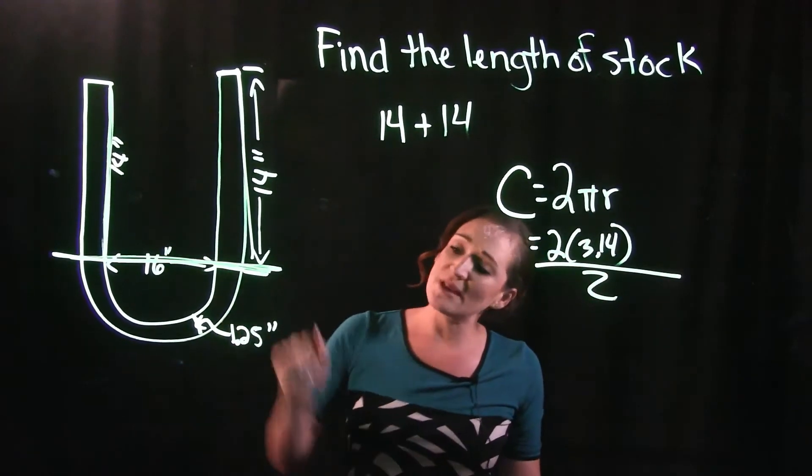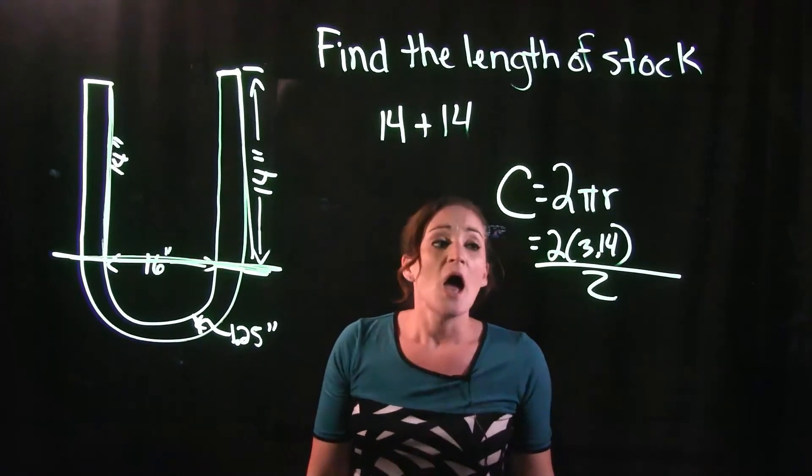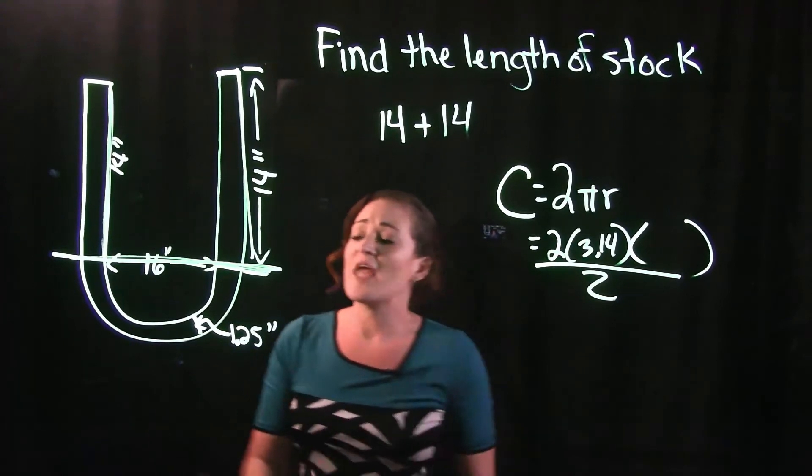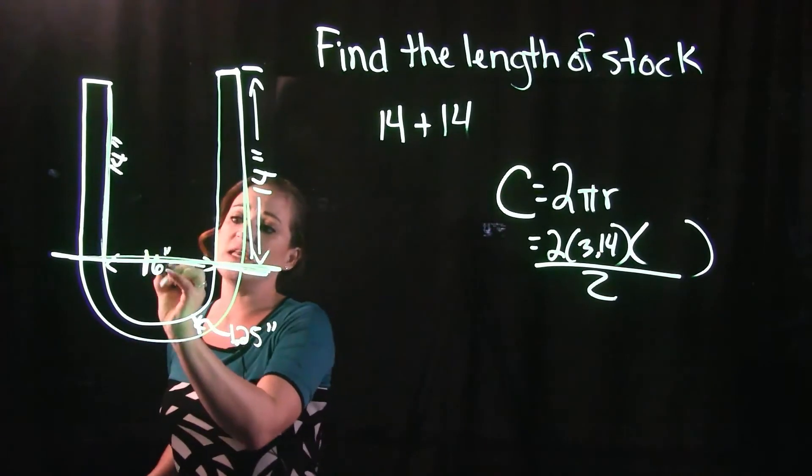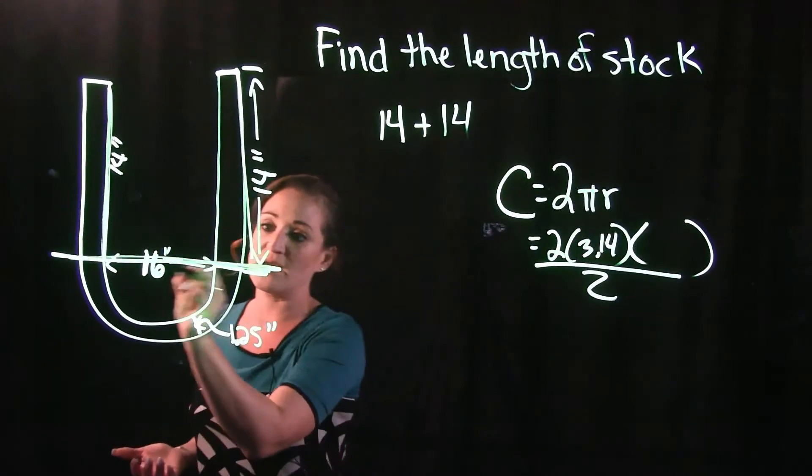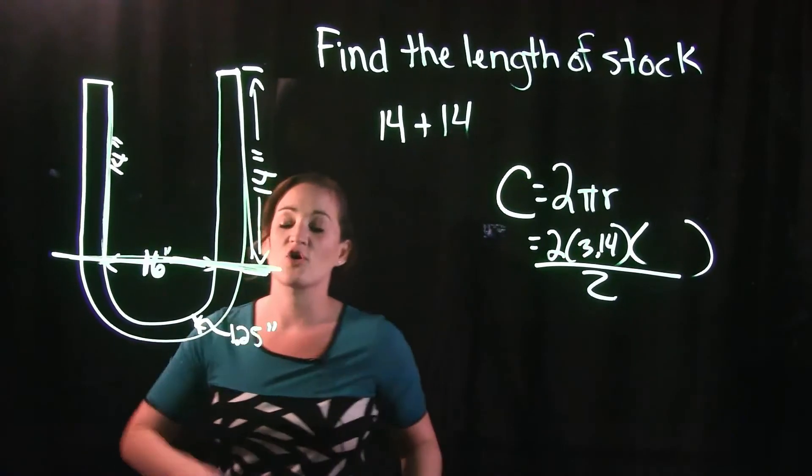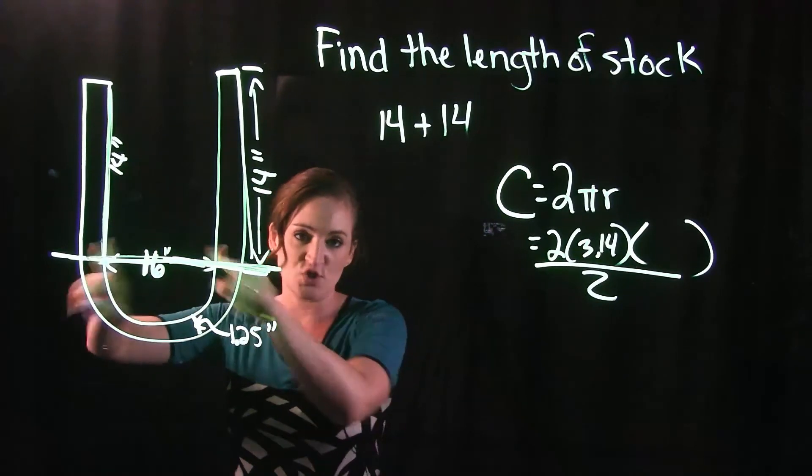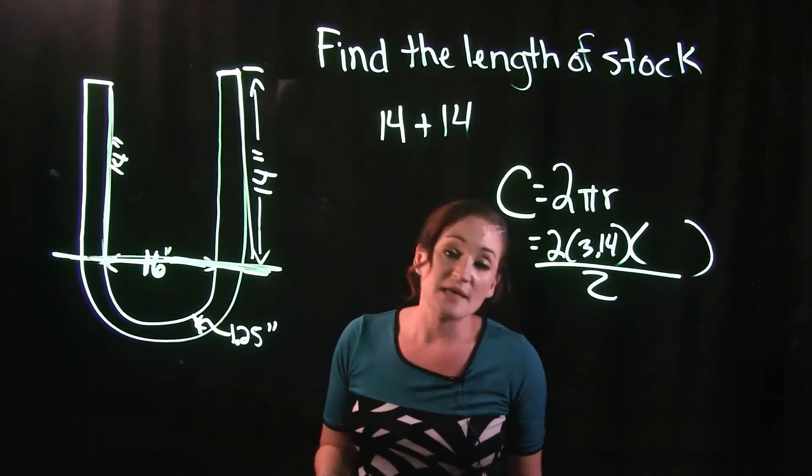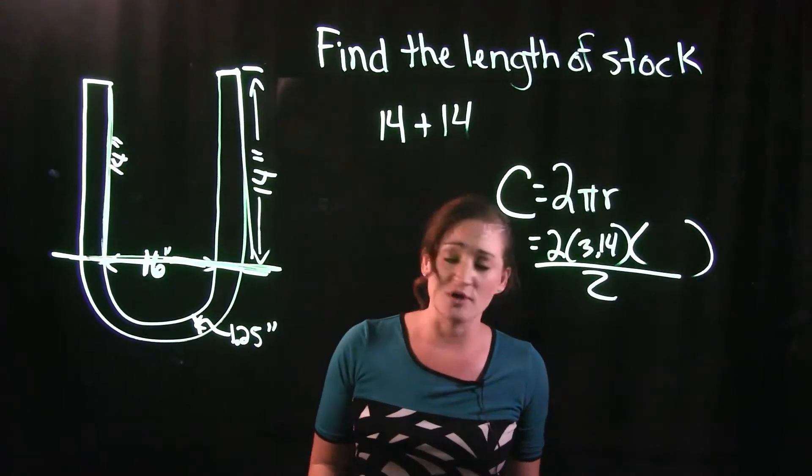But we still need to figure out what is that radius going to be. They gave us this 16 right here, which represents the diameter of the circle. Diameter is straight across from edge to edge of a circle cutting straight through. Radius is half of a diameter, so if our diameter is 16, our radius would then be 8.